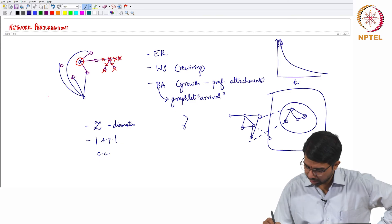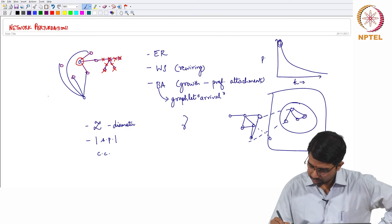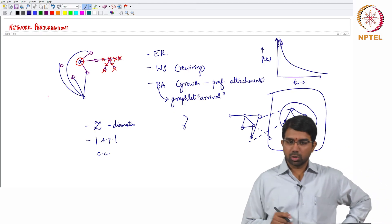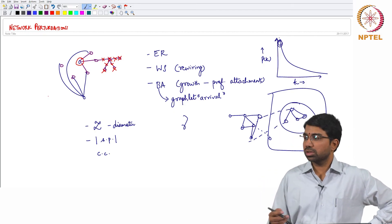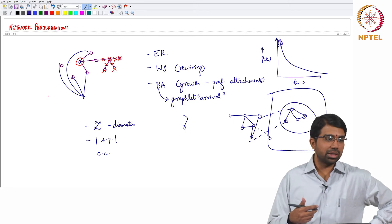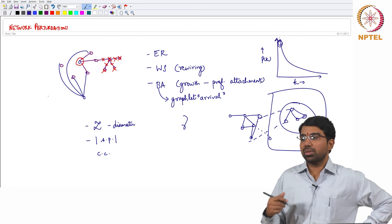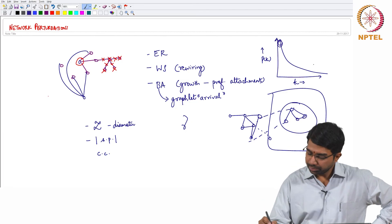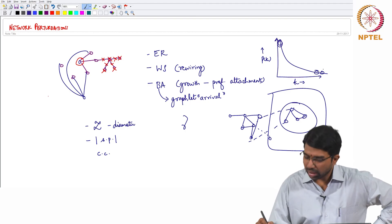So once again this is k versus p of k. So these are the most populous nodes. So you are very likely to pick one of these nodes, hit one of these nodes when you hit at random. The problem for the Barabasi-Albert graph comes when you start hitting these nodes.